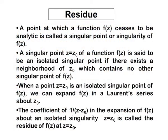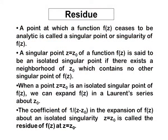We now define the important property named residue. Before that, let us define what is called a singular point. A singular point is a point in the domain at which analyticity fails; in other terms, a point at which f(z) ceases to be analytic is called a singular point or singularity of f(z). We can define isolated and non-isolated singular points. A point z = z0 is said to be an isolated singular point or isolated singularity if there exists a neighborhood of z0 which contains no other singular point of f(z). An isolated singular point is not densely located — it is a point in isolation that is alone as a kind of singular point for f(z).